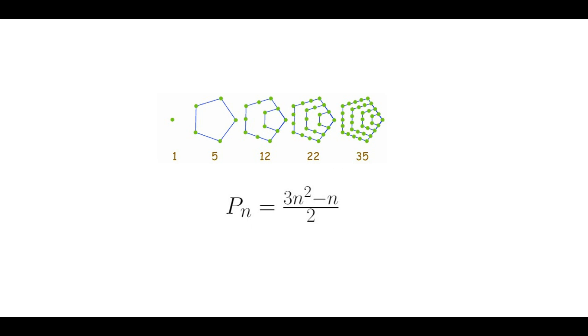The nth pentagonal number, which I will write as Pn, is the number of unit objects or dots that can be arranged in a regular pentagon. Here are the first few pentagonal numbers.